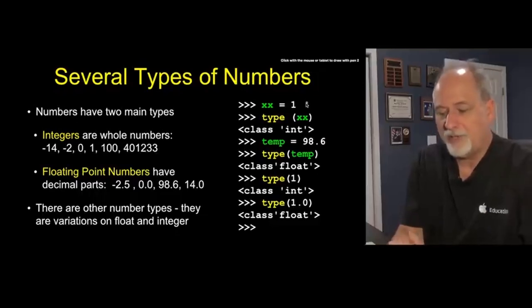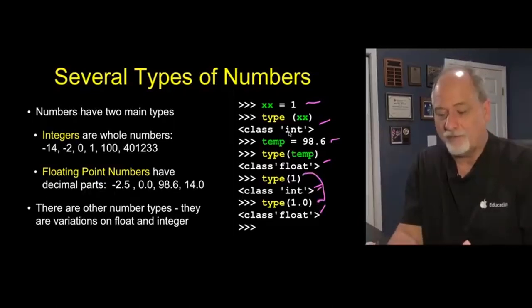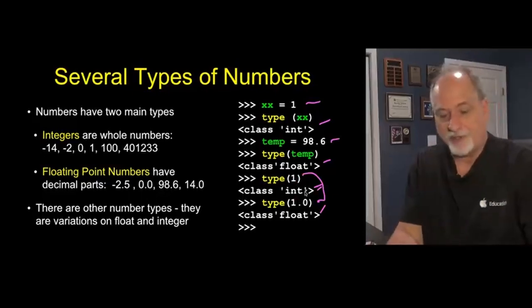And there are even several types of numbers, and we'll even see Booleans and others later. Like one with no decimal, that's an integer number. 98.6 with a decimal, that's a floating point number. So constants can be both integer and floating point. And I'm just asking over and over, what is the type of what's in XXX? What's the type of what's in temp? What's the type of the constant 1? And what's the type of 1.0?